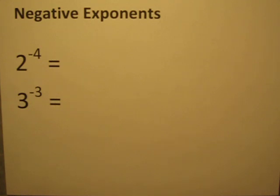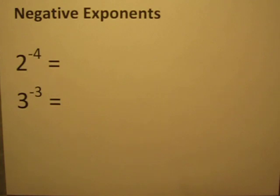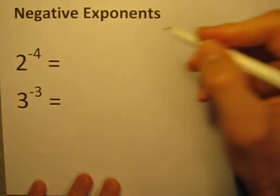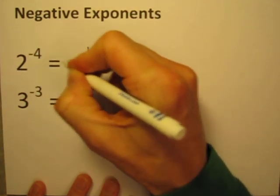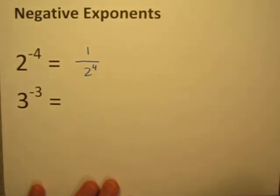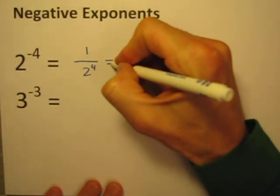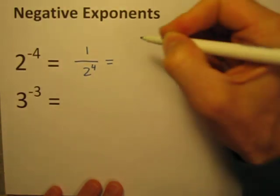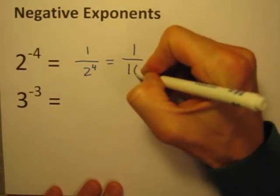Sometimes the explanation goes a little bit like this. If you have 2 to the negative 4th power, what you're supposed to do is take this number and turn it into a fraction, put a 1 on the top and move this to the bottom, and keep the exponent but get rid of the negative sign. So you end up with 1 over 2 to the 4th power, and since 2 to the 4th is 2 times 2 times 2 times 2, this is going to be 1 over 16.